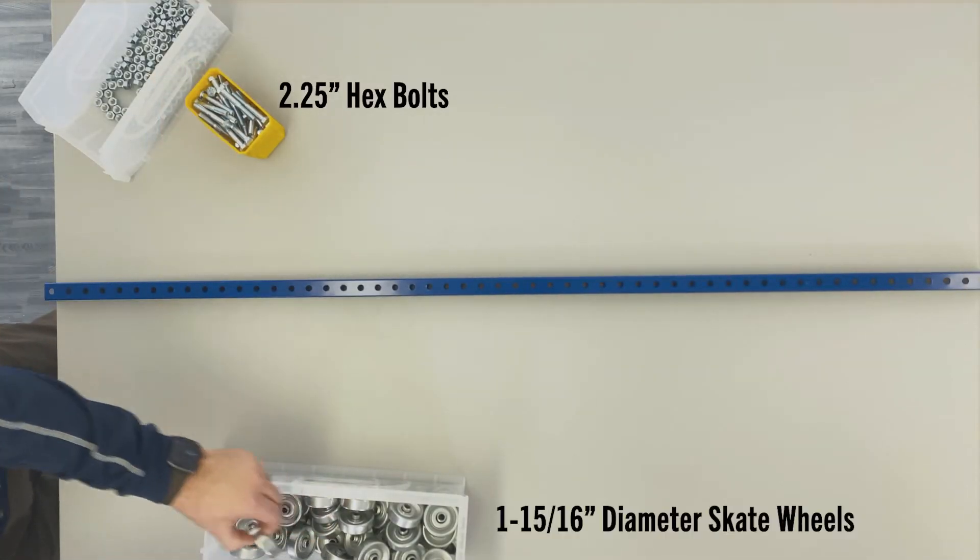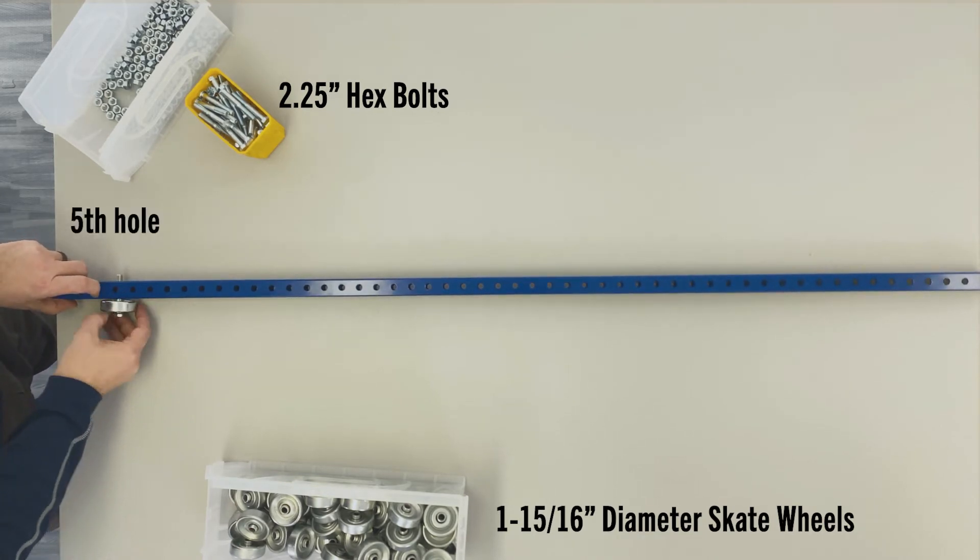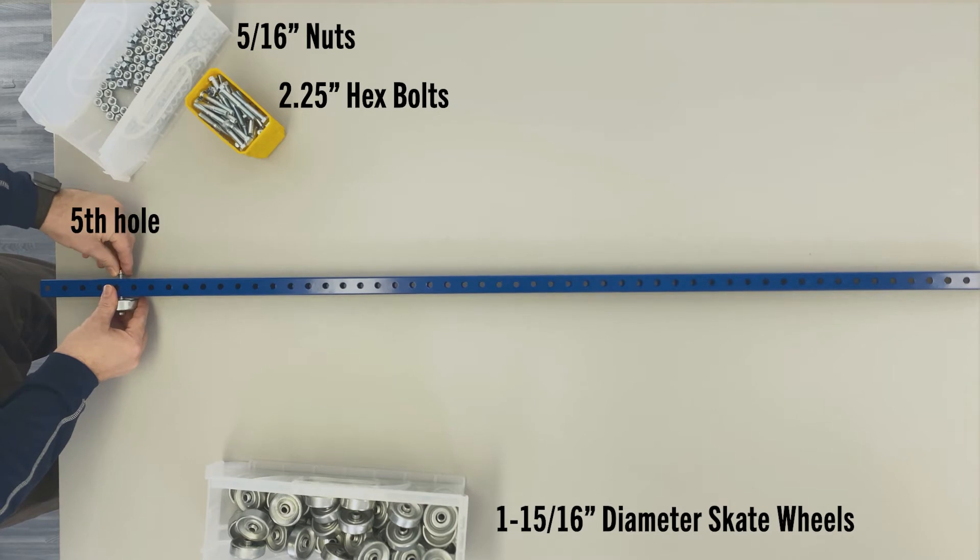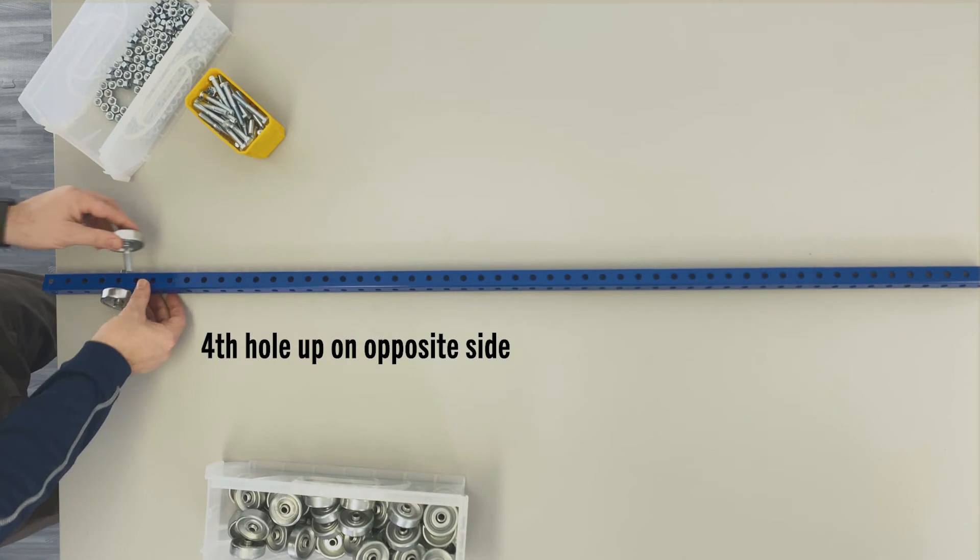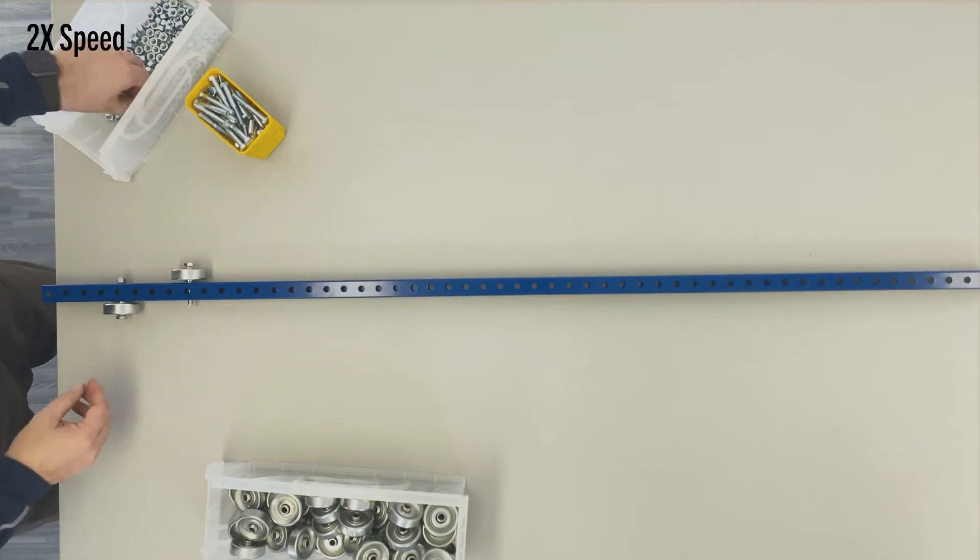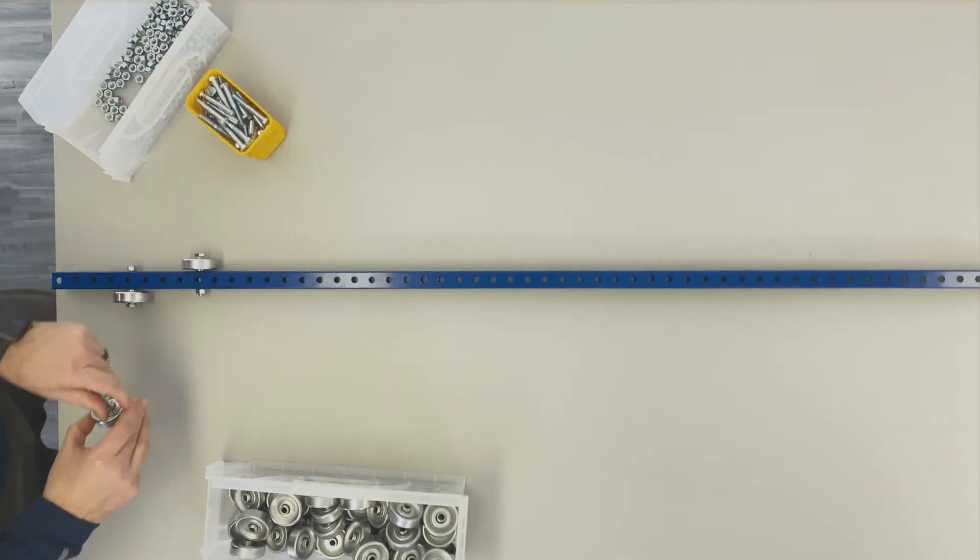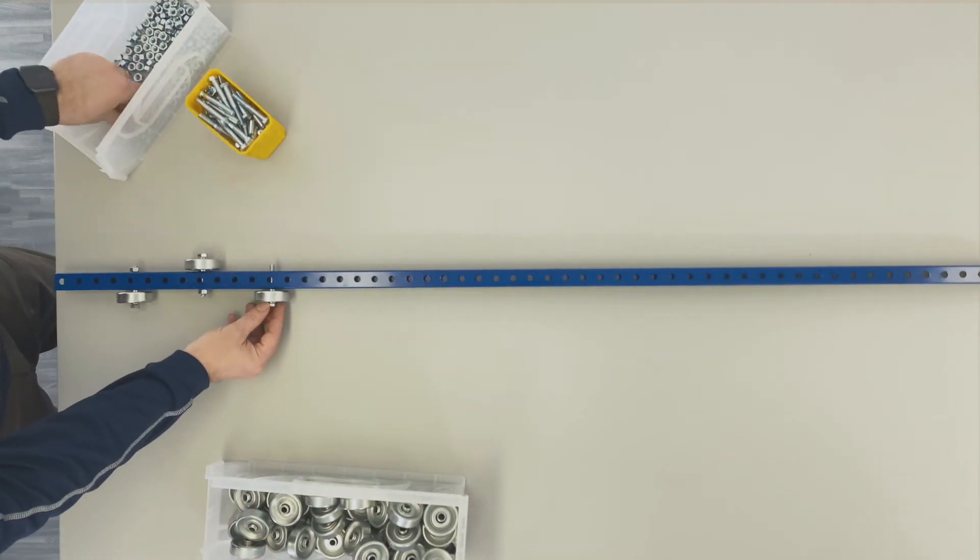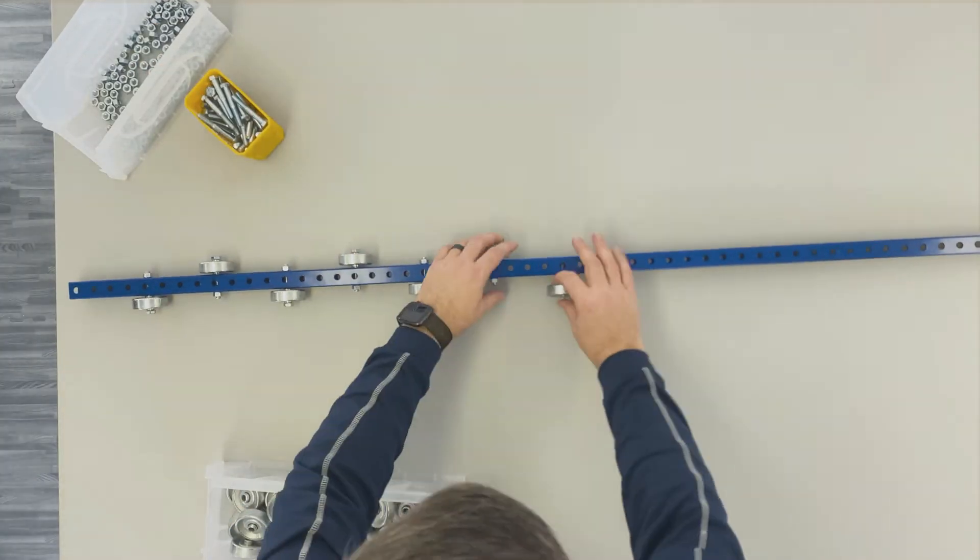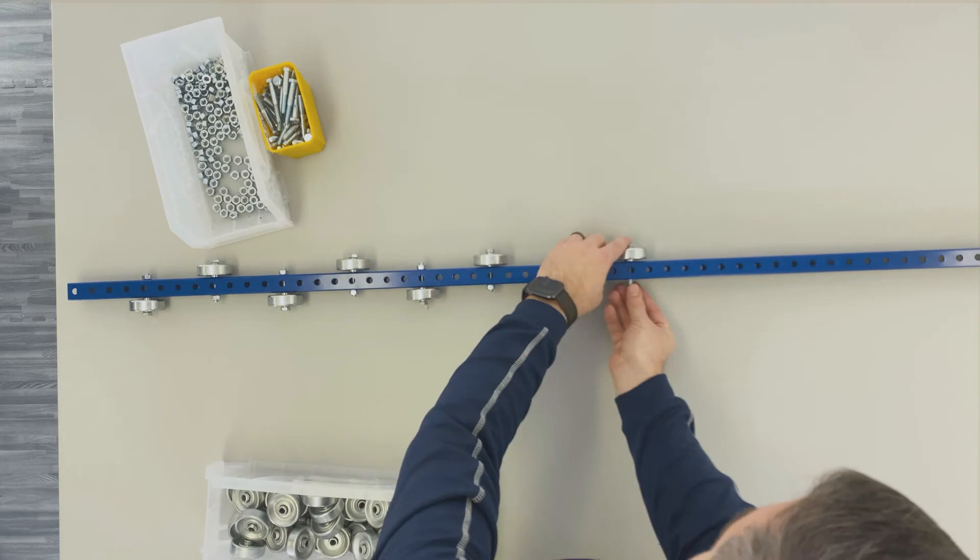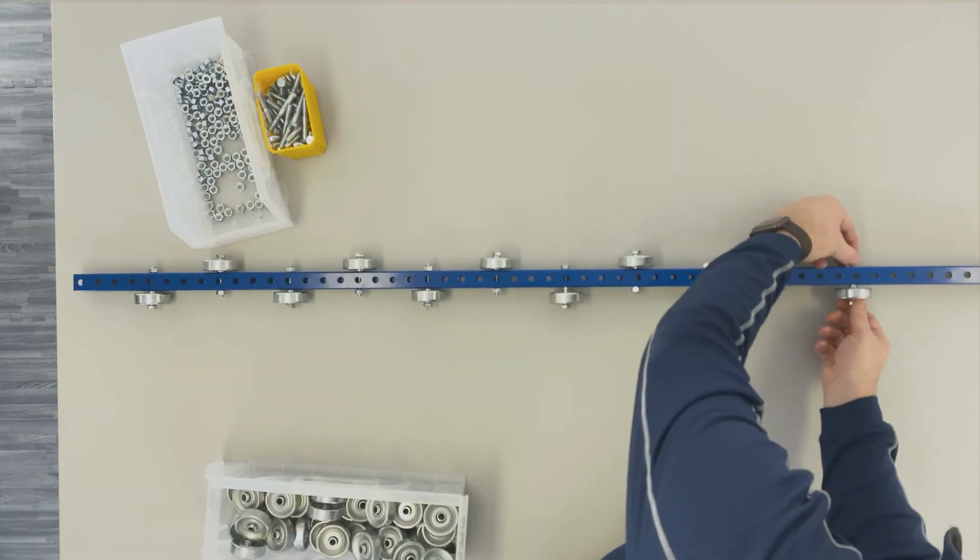Place the first wheel in the fifth hole of the skate rail. Place the next skate wheel into the fourth hole on the opposite side. Alternating sides provides greater surface coverage of the bottom of the part or bin that will ride on the skate rail. Note, we use two and a quarter inch hex bolts when installing skate wheels.